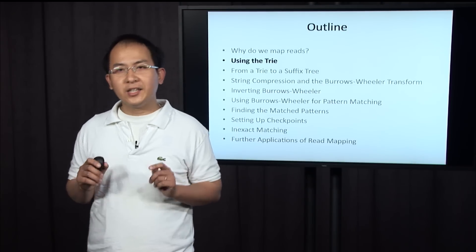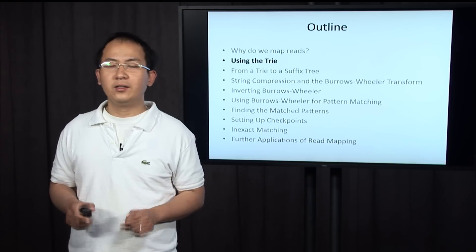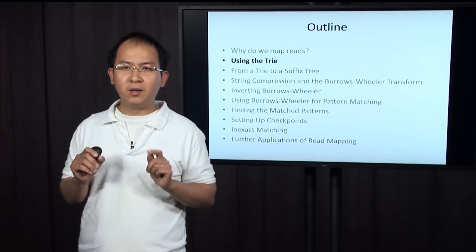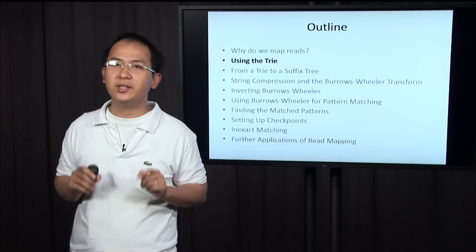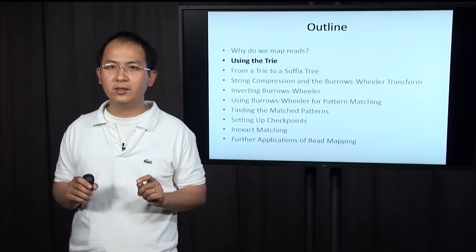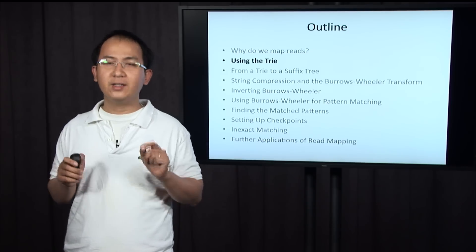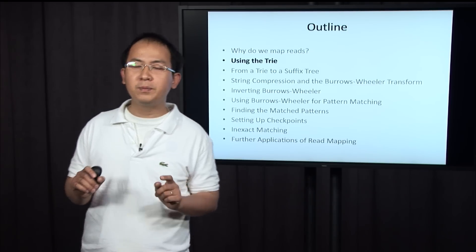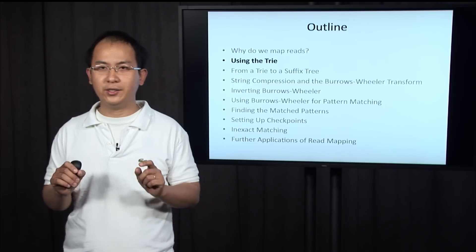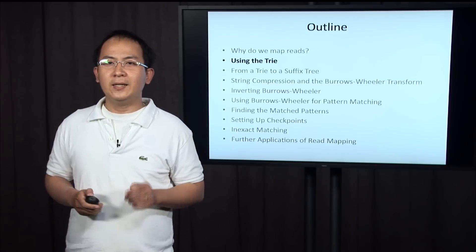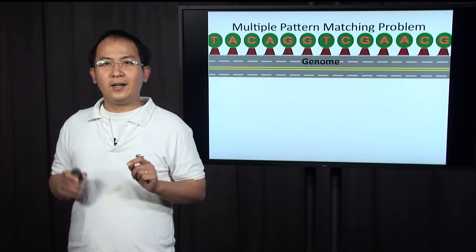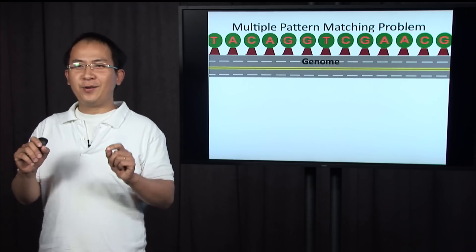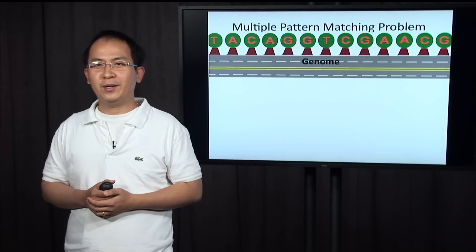In the previous section, Phillips explained why the problem of multiple pattern matching is important, and he further gave an algorithm for solving the multiple pattern matching problem. But what is the way that he solved the problem?